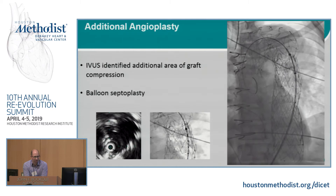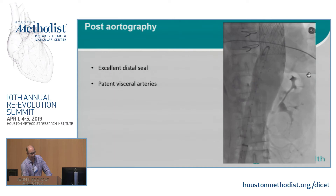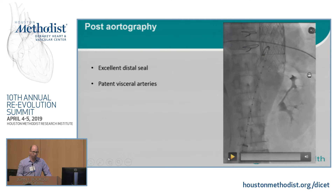The end result was a great distal seal and a great proximal seal because we landed in Dacron to Dacron. We're hopeful that we've completely excluded her whole thoracic aorta. She now has complete aortic replacement from her root to her celiac. She'll probably later need a visceral debranching if we're going to continue with an endovascular approach or open repair of her abdominal aorta. But as the cardiac surgeon, I'm done with her — I've taken out her entire thoracic aorta.